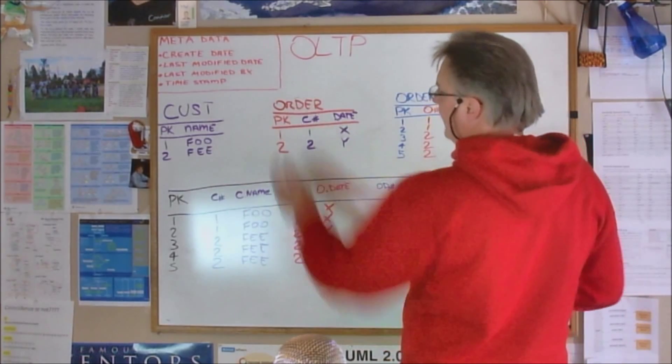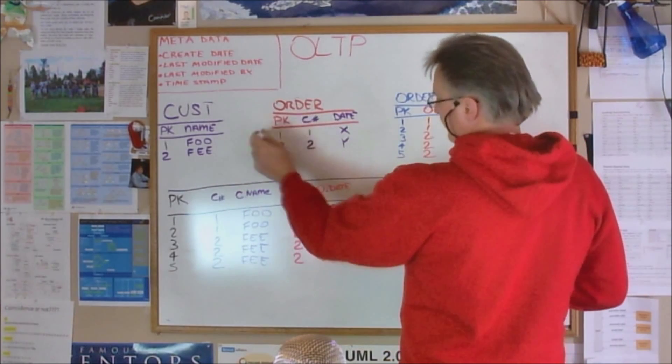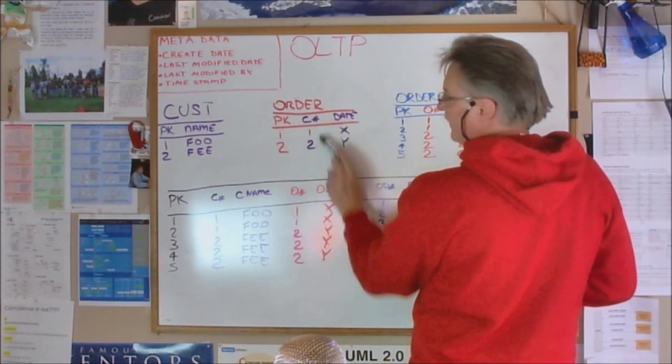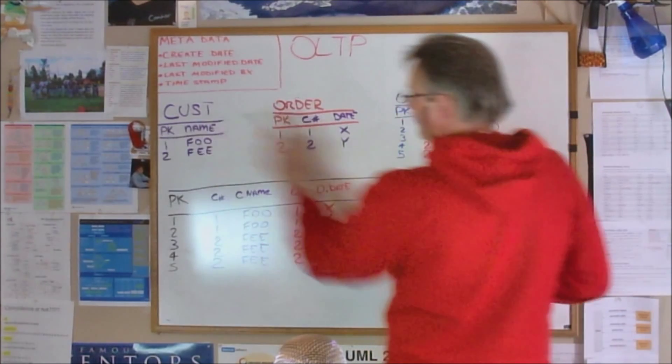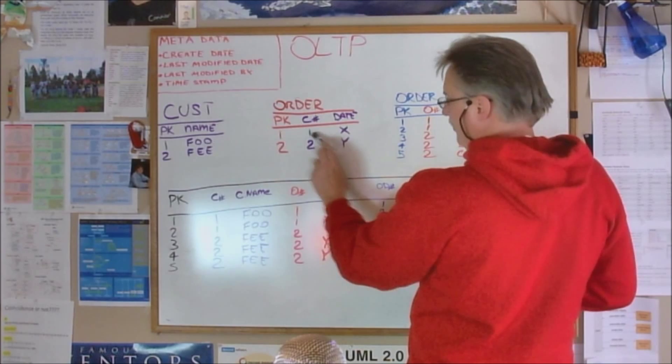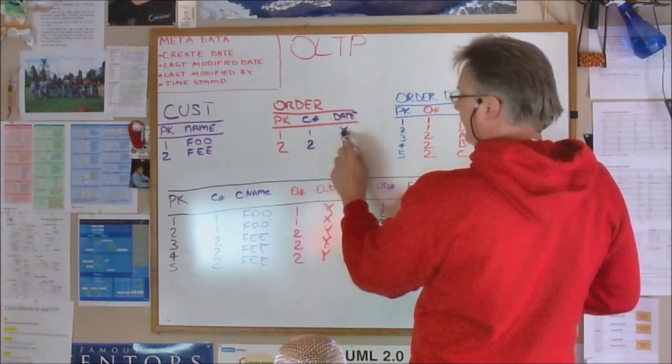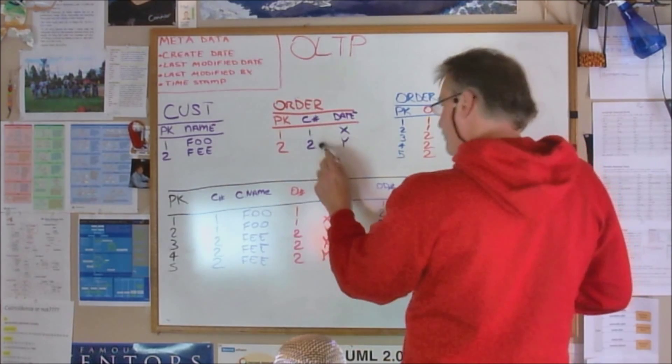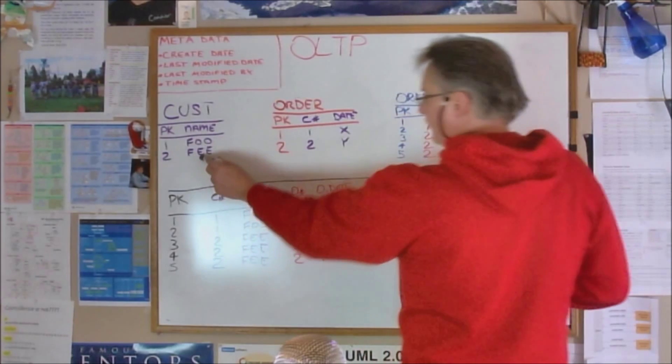In the orders we have two orders, number one and number two. Customer number one placed an order which is order number one on date X. Customer number two, that's customer fee, he placed order number two date Y.